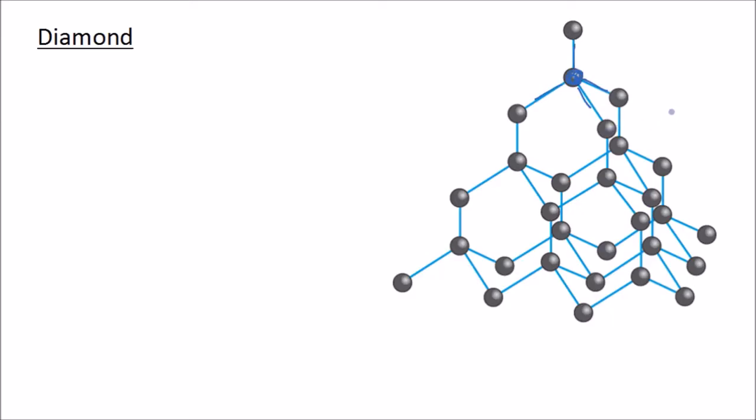And this is because each carbon has four outer electrons and therefore it can form four covalent bonds. Now this makes diamond very hard and it gives it a very high melting point. Diamond doesn't conduct electricity and the reason for that is because it doesn't have any delocalized electrons.